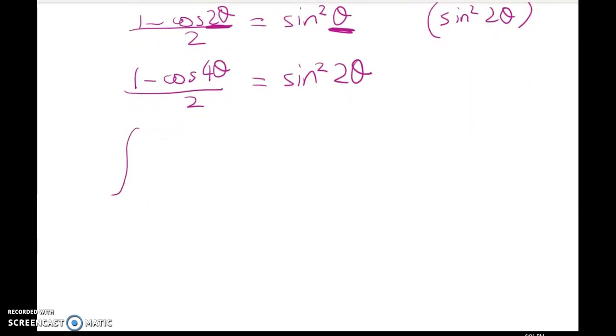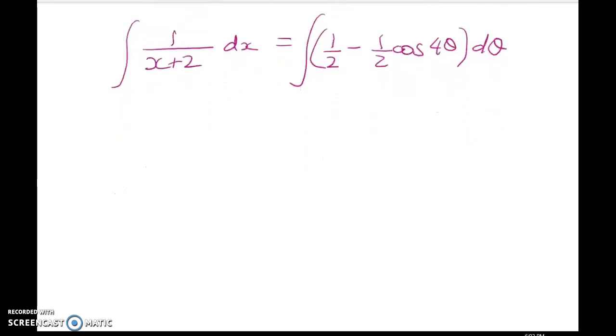So here we've got 1 over x plus 2 dx is equal to 1 half minus 1 half cos 4 theta d theta, which is suddenly quite straightforward.